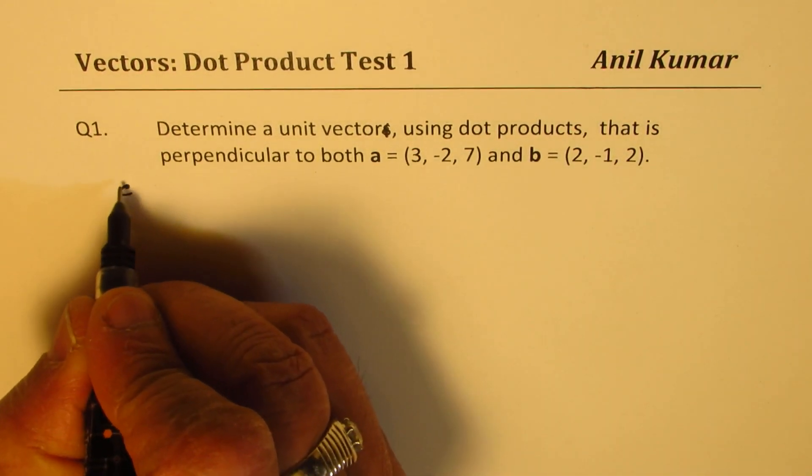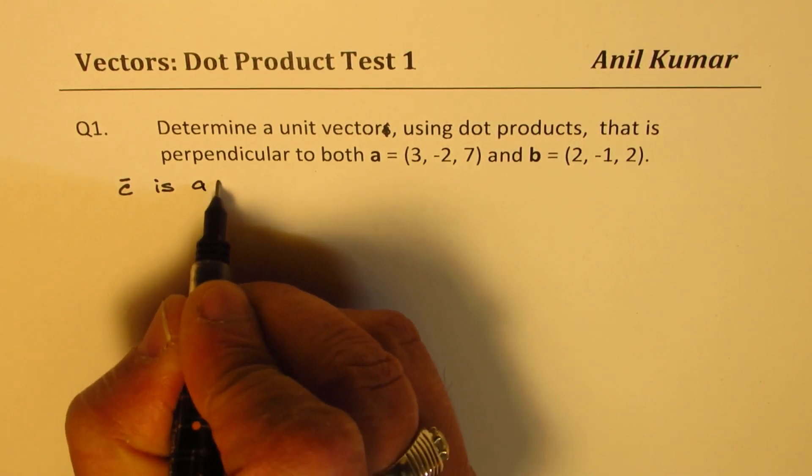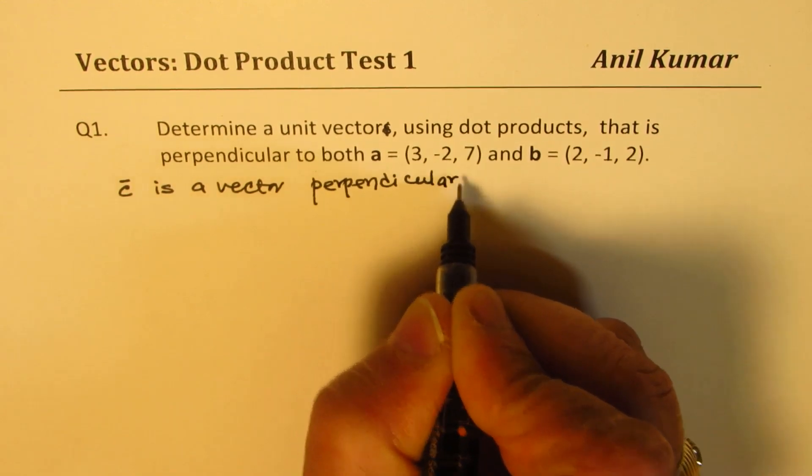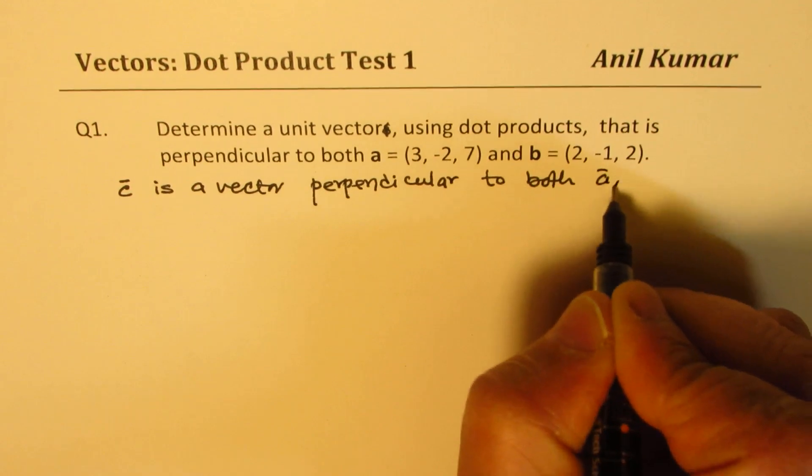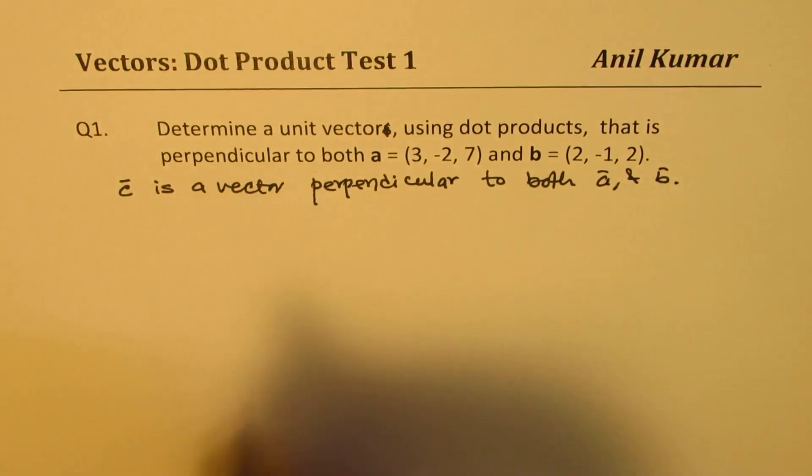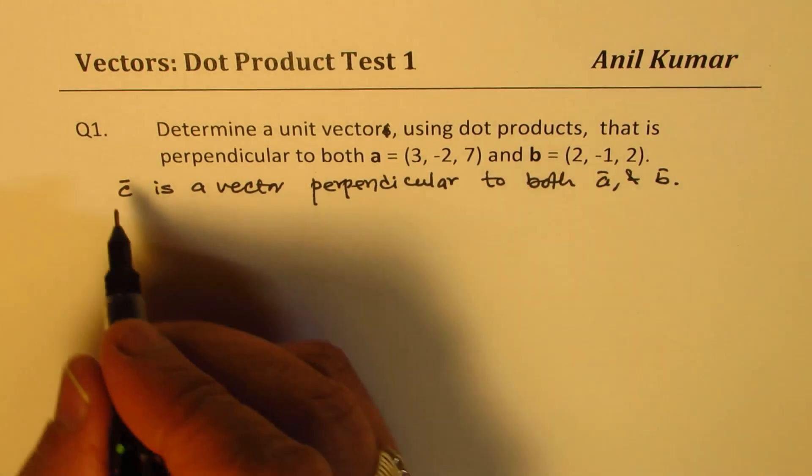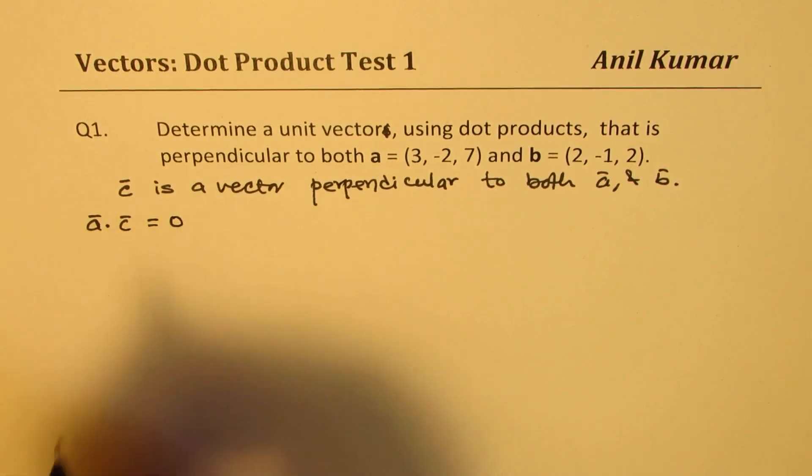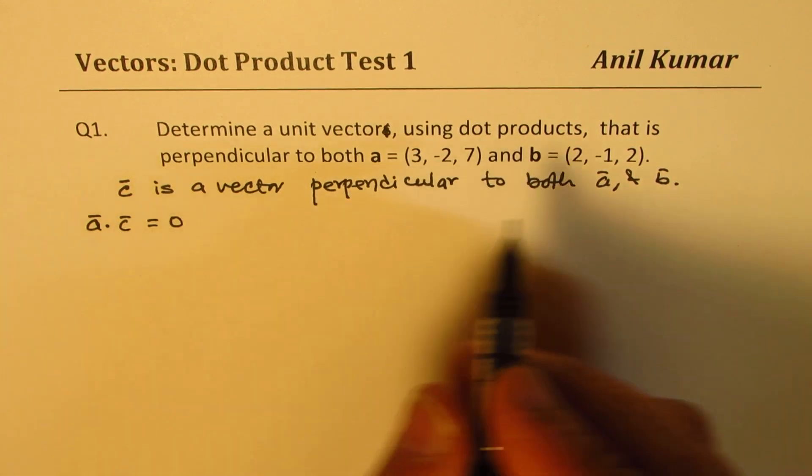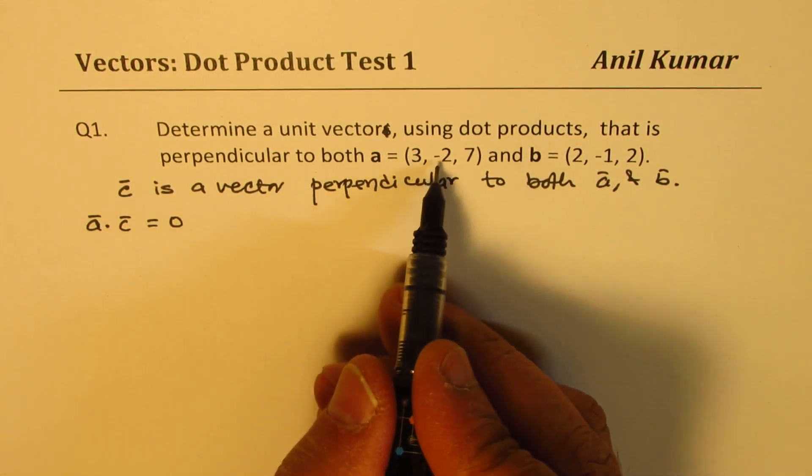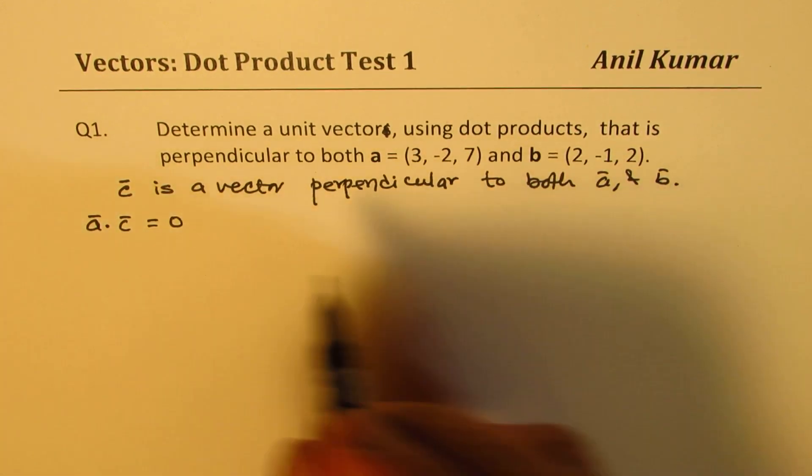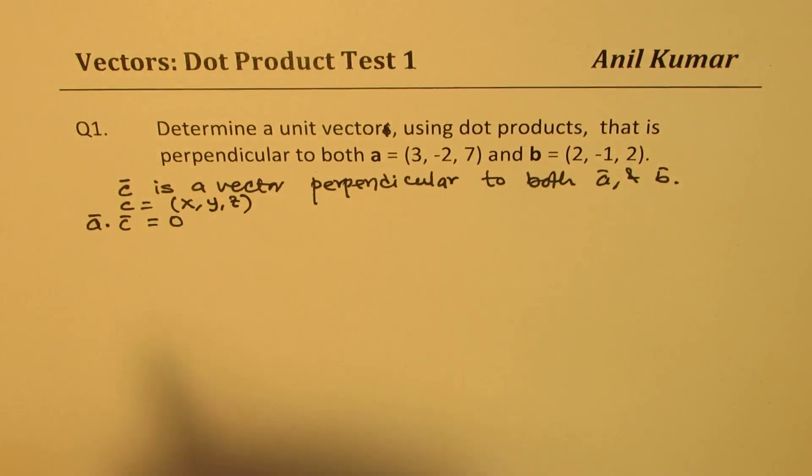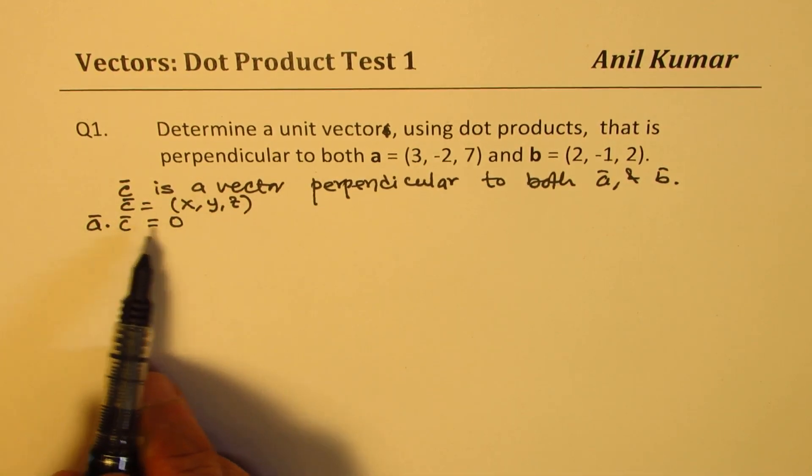Now, let us say that C is a vector perpendicular to both vector A and vector B. In that case, we know that, let us say vector C is x, y, z. So, in that case, vector A dot vector C should be equal to 0. And also, if I say C is x, y, z, and A is 3, -2, 7, let me write down C equals to x, y, z. We don't know what it is. So that really means that A dot C is 0.